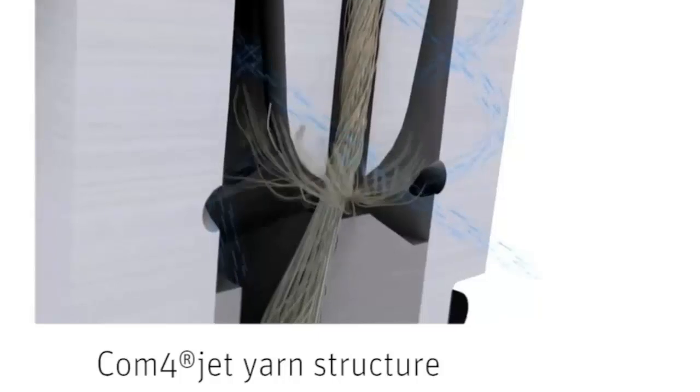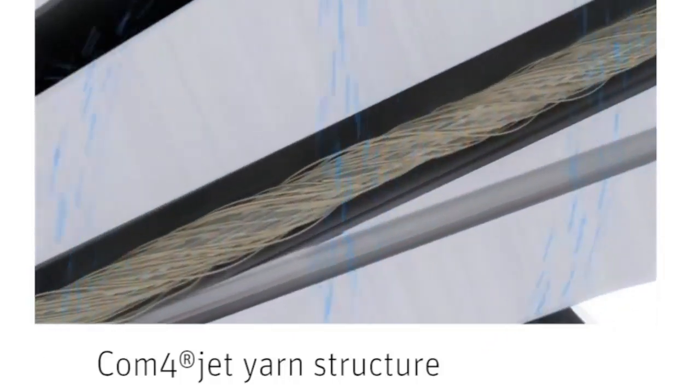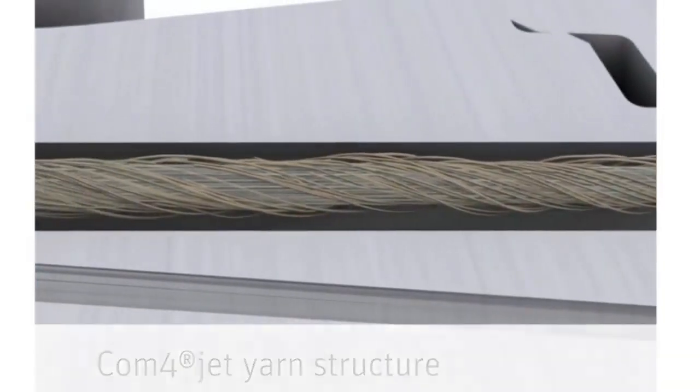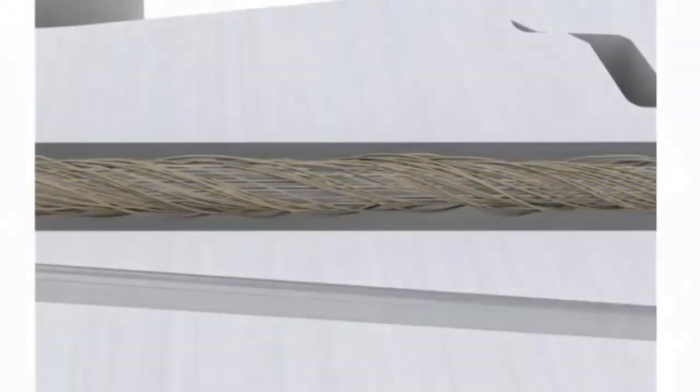The ComfortJet yarn structure shows parallel fiber mass forming the core of the yarn and the fiber ends twisted around the core. The yarn surface is smooth and even and shows a low value of yarn hairiness.